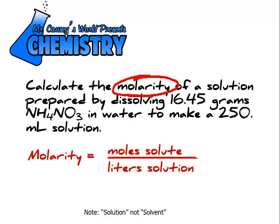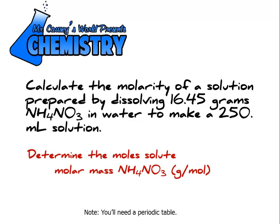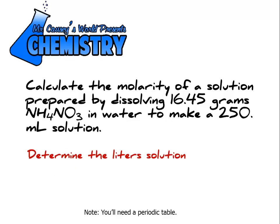Once you know your molarity equation, what you want to do is create a plan. First, we want to determine the moles of solute, which means we're going to determine the molar mass of ammonium nitrate and use it to calculate the moles of solute — so be sure you get out your periodic table. Then we'll determine the liters of solution, and then we'll plug and chug.